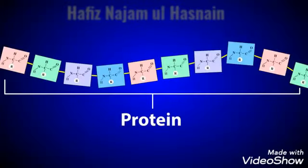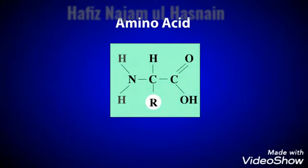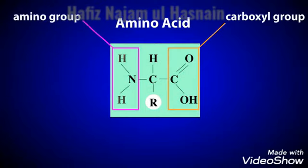Proteins are made from long chains of amino acids. Amino acids all have a similar structure, with carboxyl and amino functional groups. What makes each amino acid unique is the presence of a variable, or R group. The R group gives each amino acid its chemical properties.